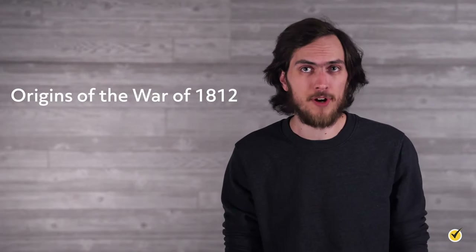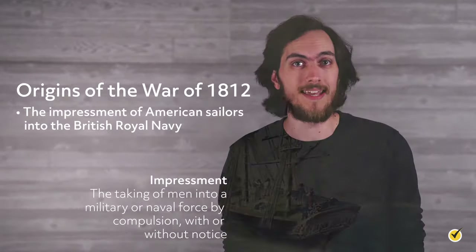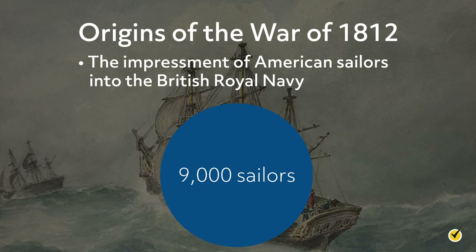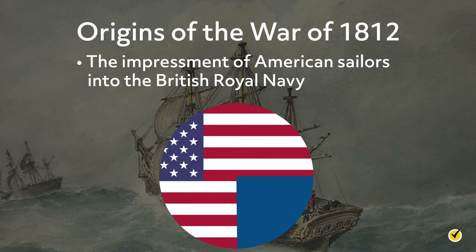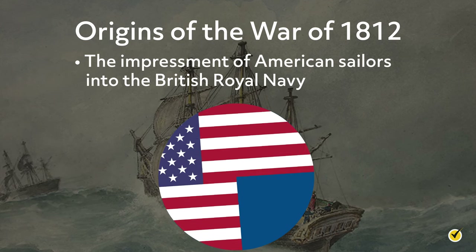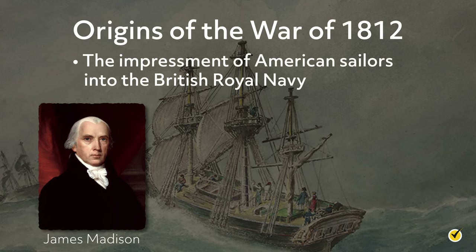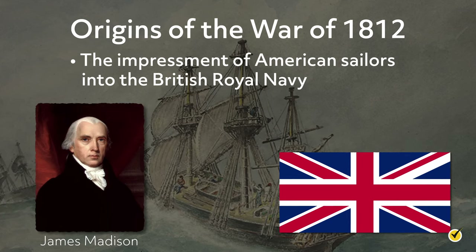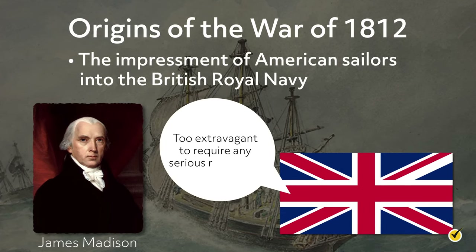The first and probably most prominent reason was the impressment of American sailors into the Royal Navy. From 1803 to 1812, as many as 9,000 sailors were forced into service with the British Navy, about 75% from America. American ships were routinely stopped by British vessels and searched for suspected British deserters. When James Madison, secretary of state at the time, insisted the British cease the practice of impressment, the British foreign secretary dismissed the demands as too extravagant to require any serious refutation.